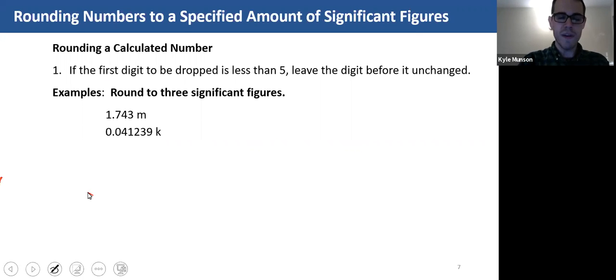Round each of the following numbers to three significant figures. First, why don't you pause the video and determine how many significant figures these numbers have to begin with. Once you've done that, we'll go on.